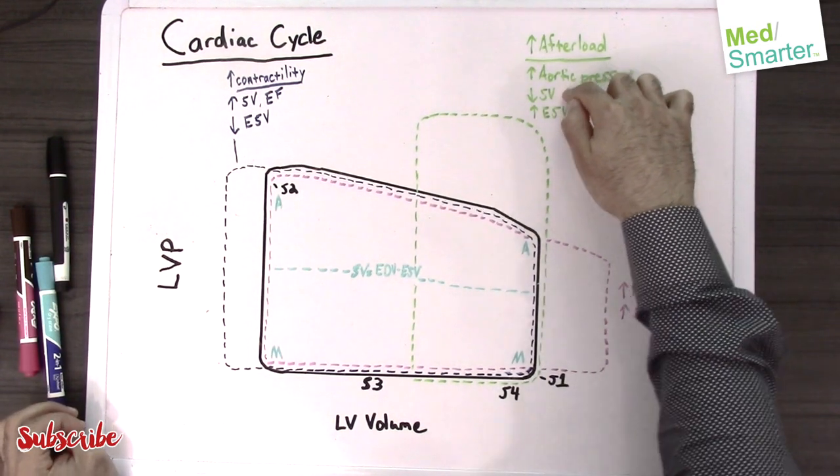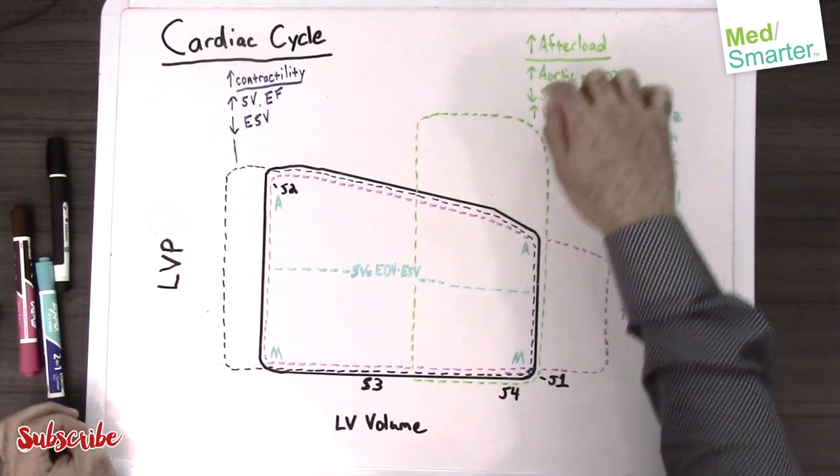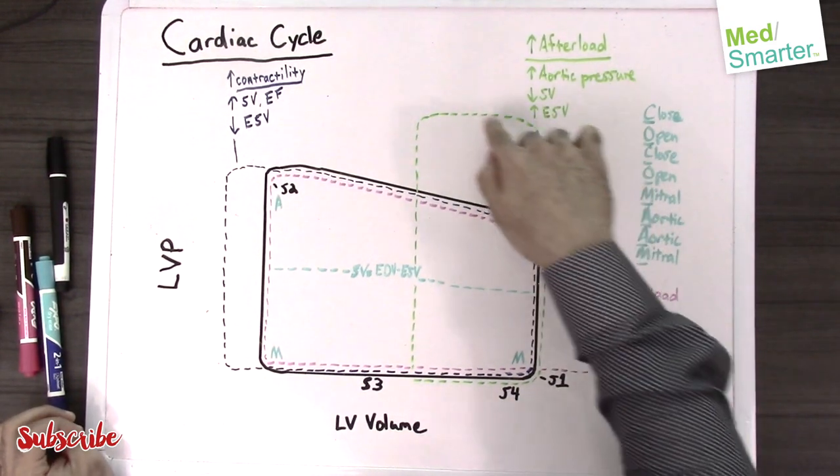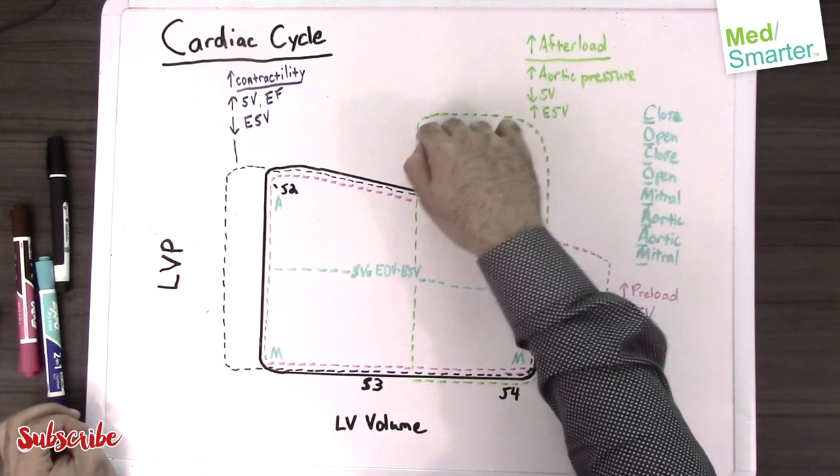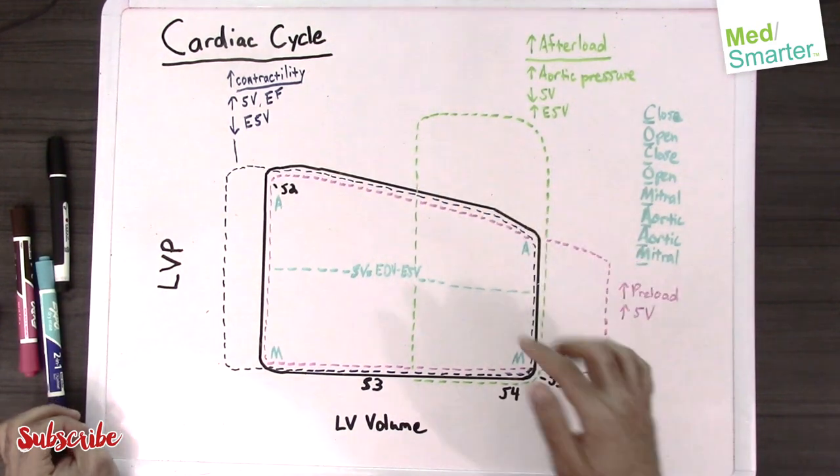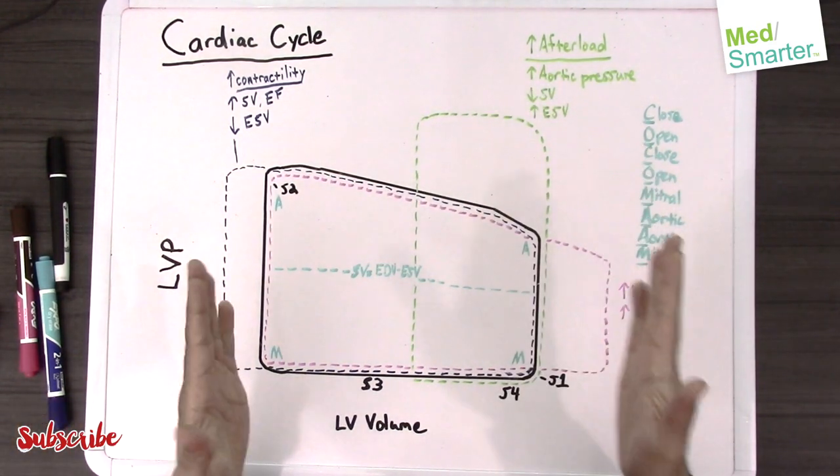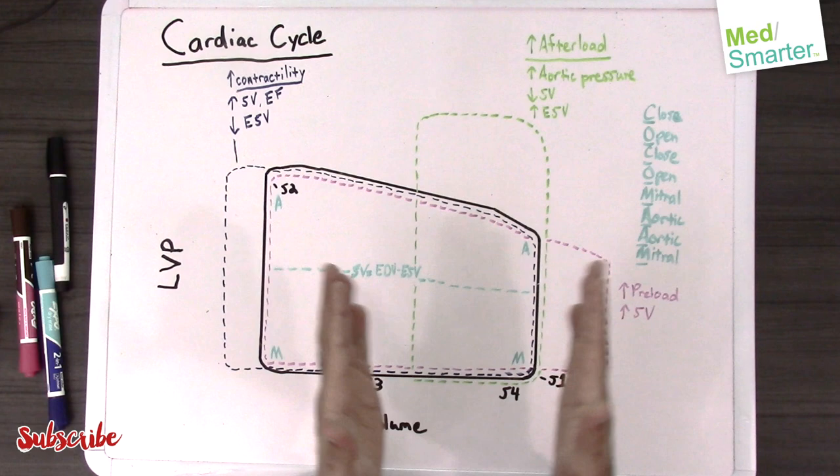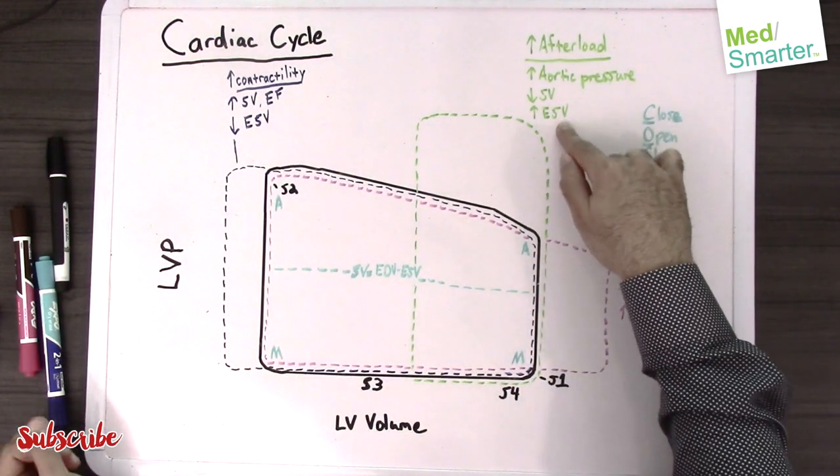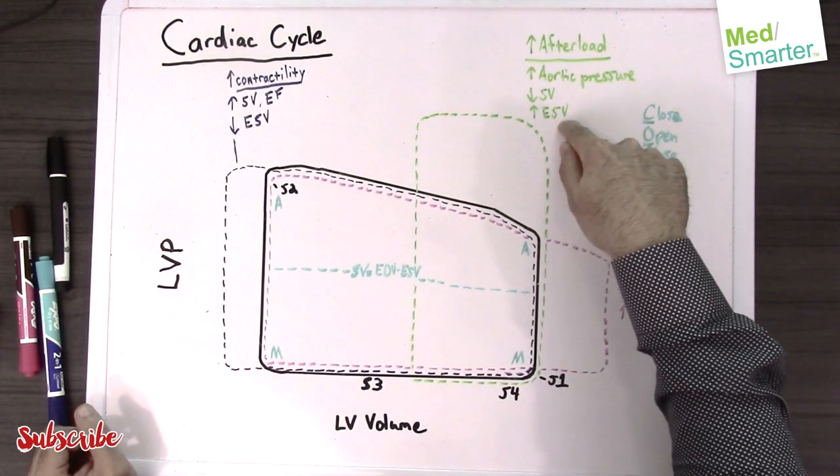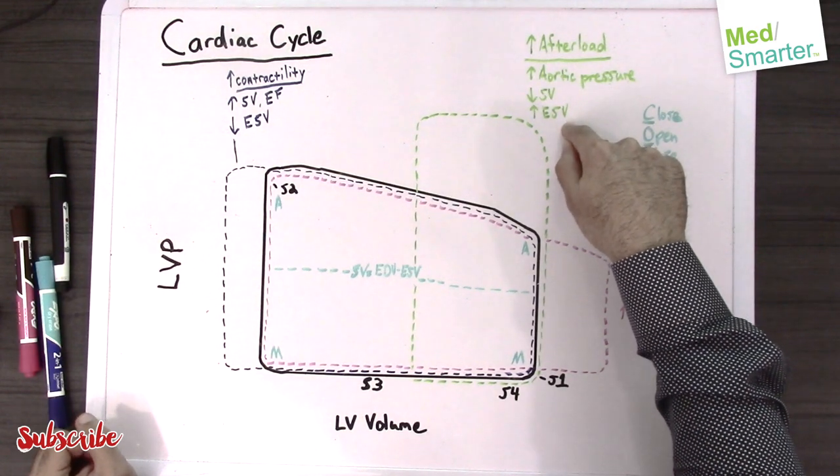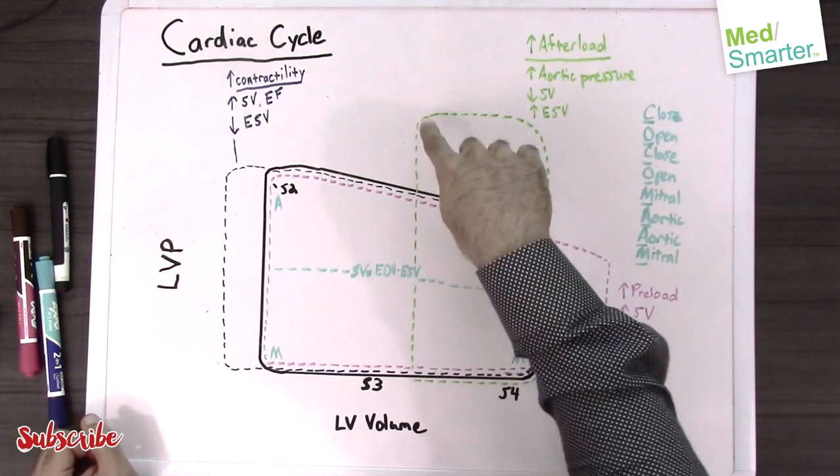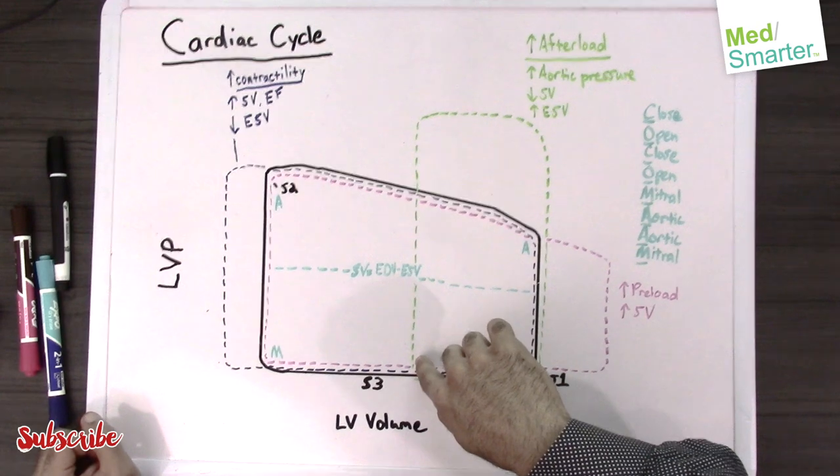If you can see here, we're decreasing the stroke volume because now we don't have enough time to get the blood out. So the ejection phase is shortened and now we're not getting all the blood out, so you can see increased systolic volume. Now at the end of systole we still have all this blood remaining.